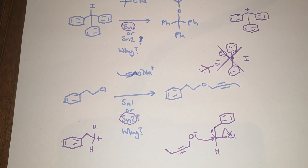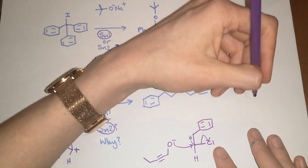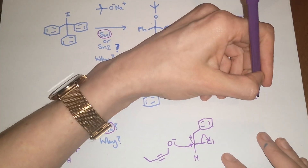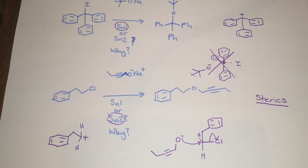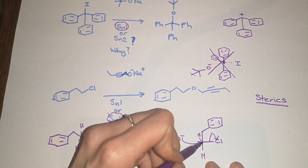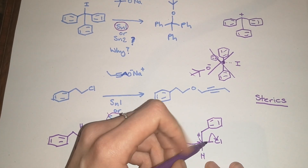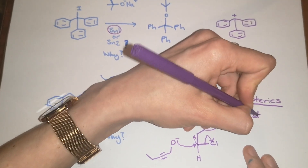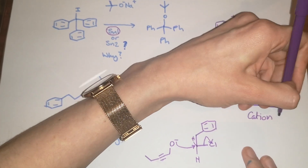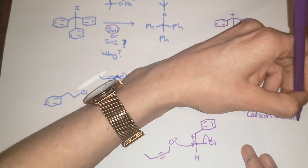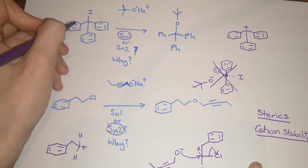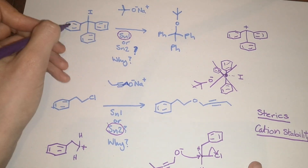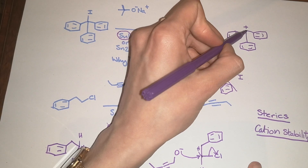Whenever you're asked to figure out whether it's SN1 or SN2, you want to look at the sterics — are your molecules big or small, is there a lot going on around that carbon or only a little bit? The second thing is cation stability — do you have groups around your carbocation that are going to stabilize the positive charge?